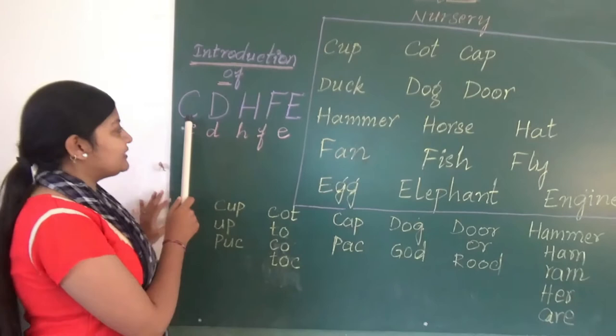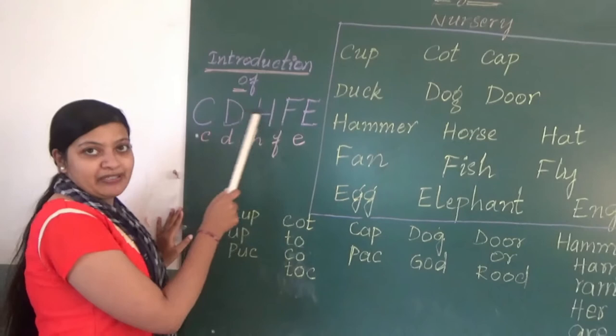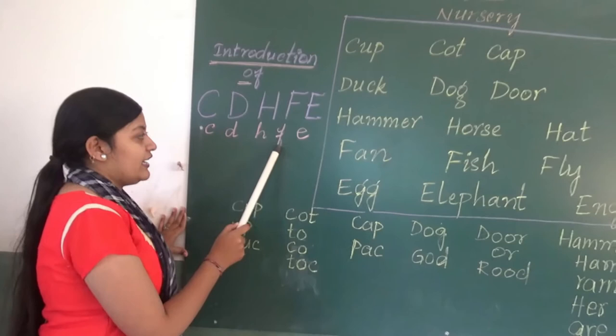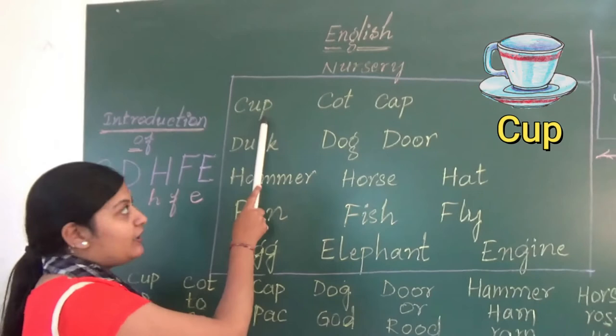Let's introduce your kids to alphabets. Capital C, D, H, F, E — these are the capital letters. Small letters: c, d, h, f, e. Let's create words.